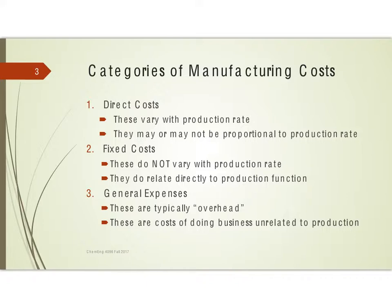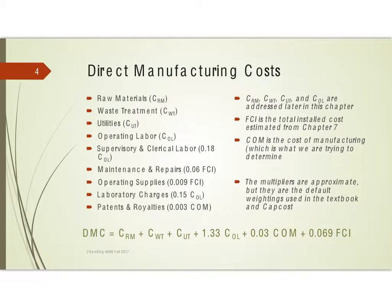Direct manufacturing costs include things like raw materials, waste treatment, utilities, operating labor, supervisory and clerical labor, maintenance and repairs, operating supplies, laboratory charges, and patents and royalties. Each is notated as C with a two-letter subscript. Raw materials, waste treatment, utilities, and operating labor will be addressed within this chapter.